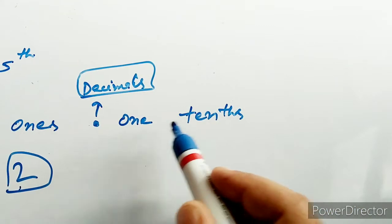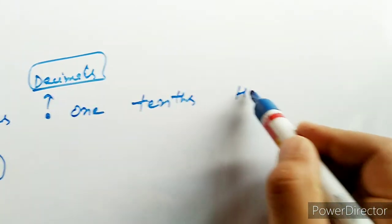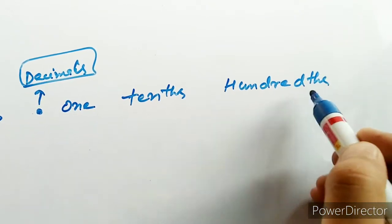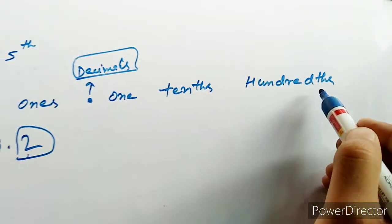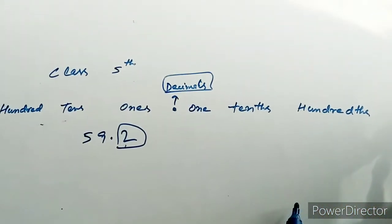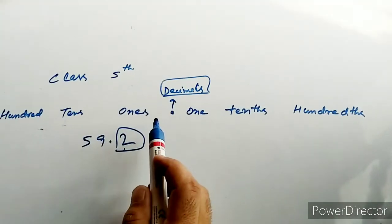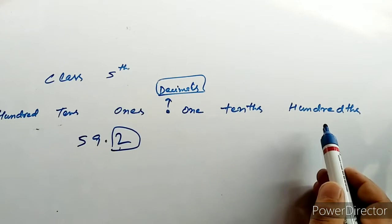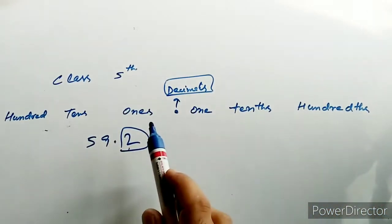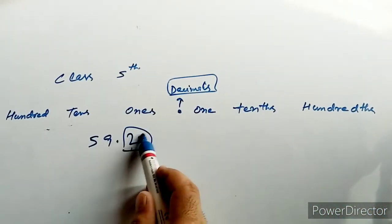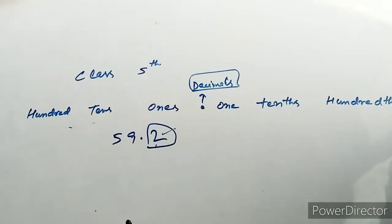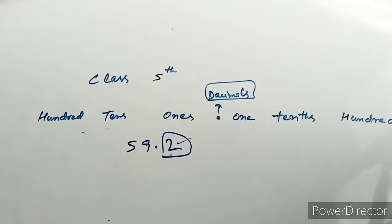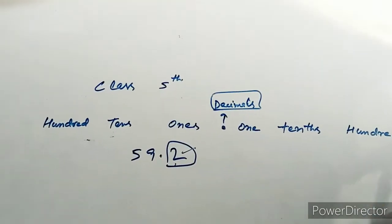फिर उसके बाद hundredths होता है। तो ऐसा आपका table होगा — decimal से पीछे को होता है ones, tens, hundreds, और decimal के आगे होता है tenths, hundredths। ठीक है बच्चो। तो आज हमने क्या करना है — हमने point के आगे वाले decimals को round off करना है, और देखेंगे कि कैसे किसको round off करना है।